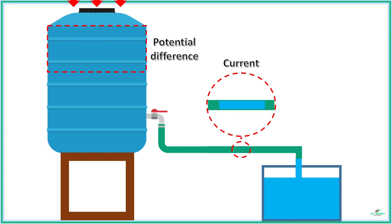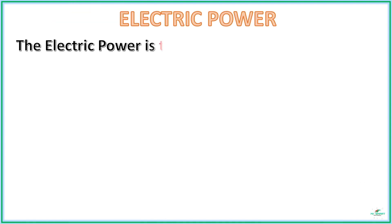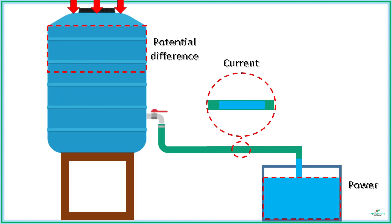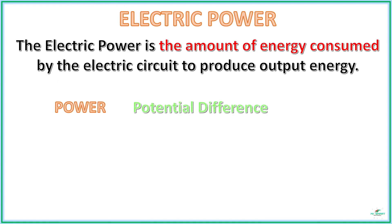What about the water consumed from the tank during this flow? This is called power. Electric power is the amount of electrical energy consumed to produce an output energy, like light from a bulb. From this illustration, it is clear that the amount of water discharged depends upon the force pushing water down and the free flow through the pipe. Similarly, electric power depends upon the potential difference and the current.